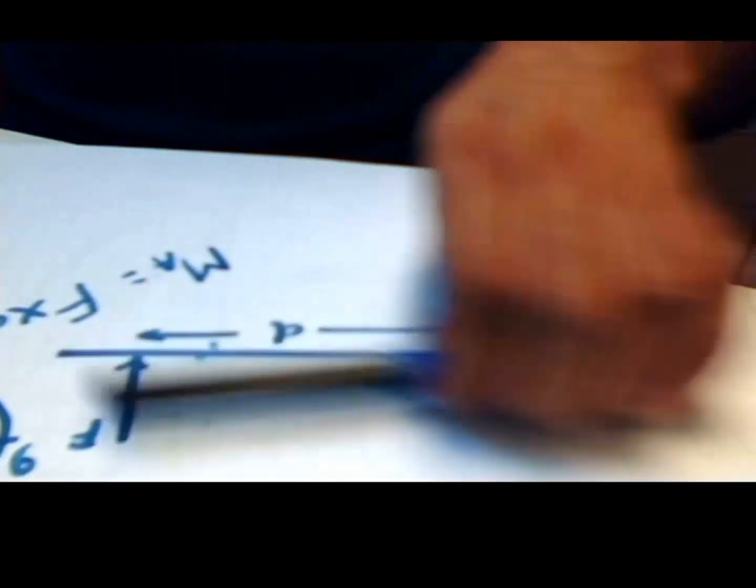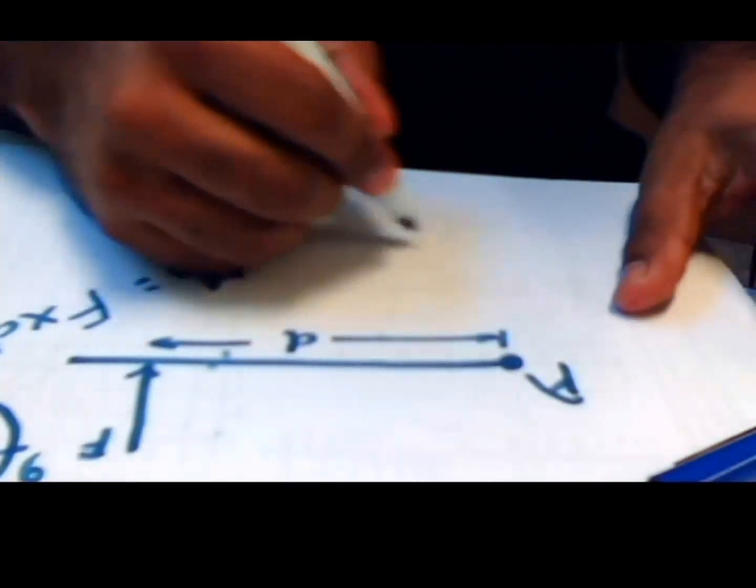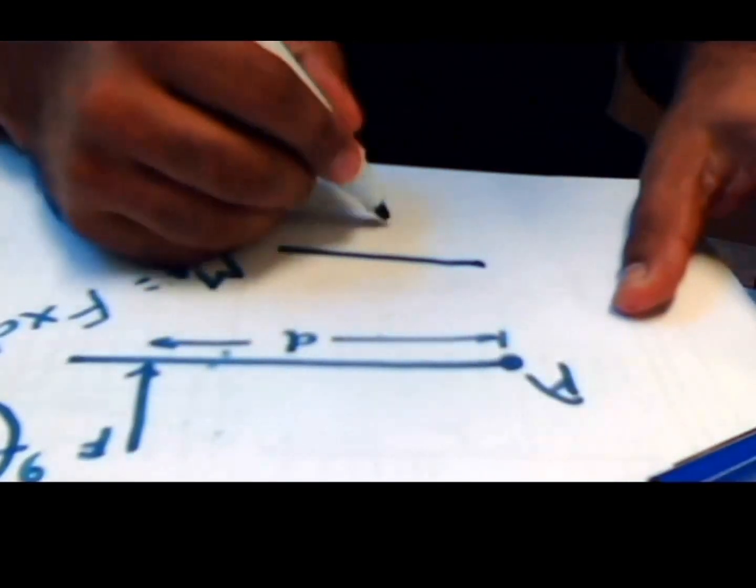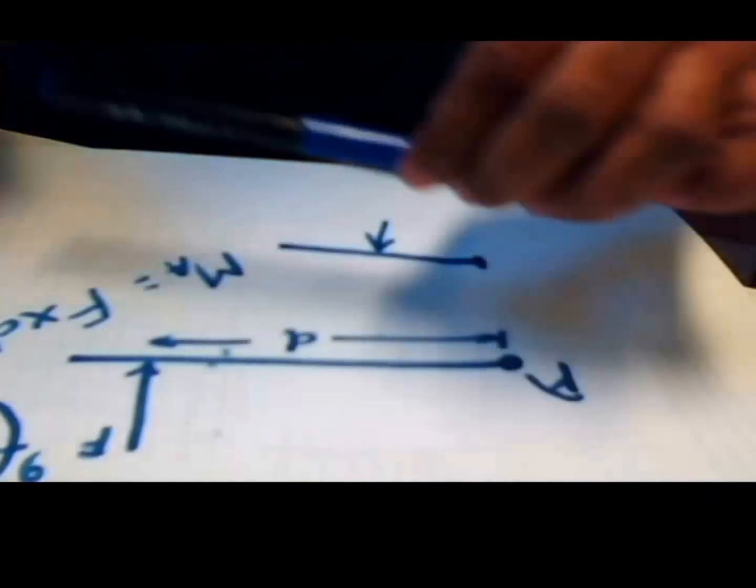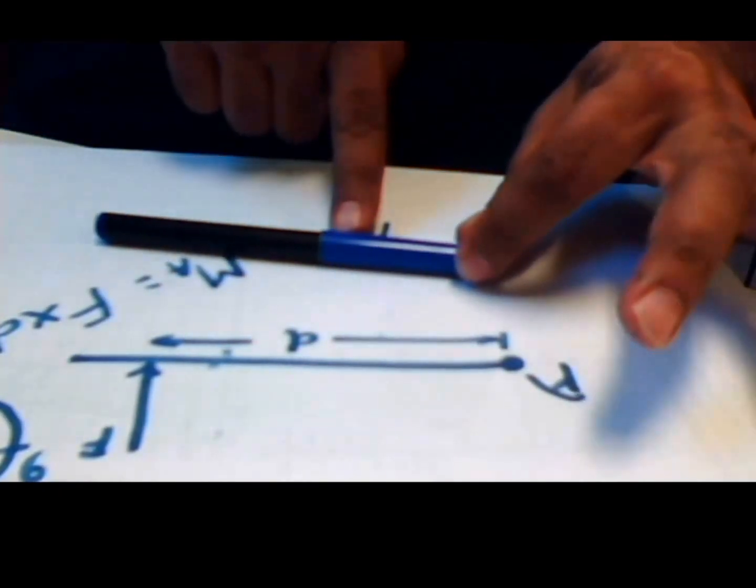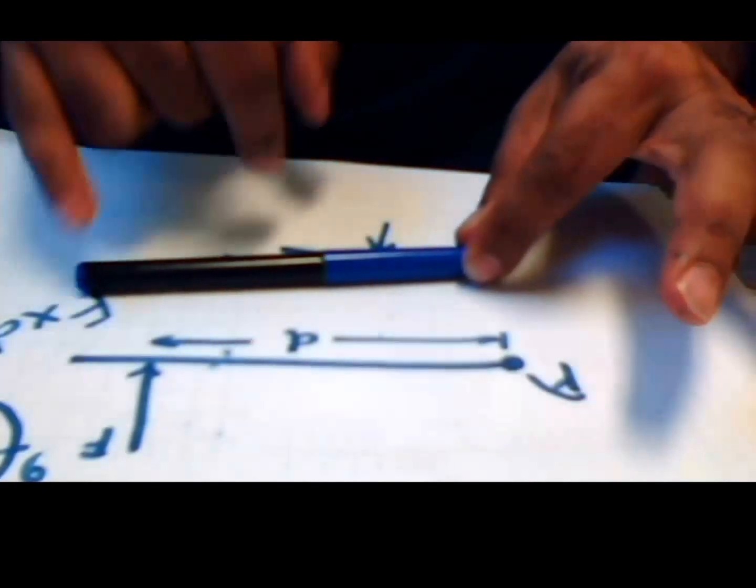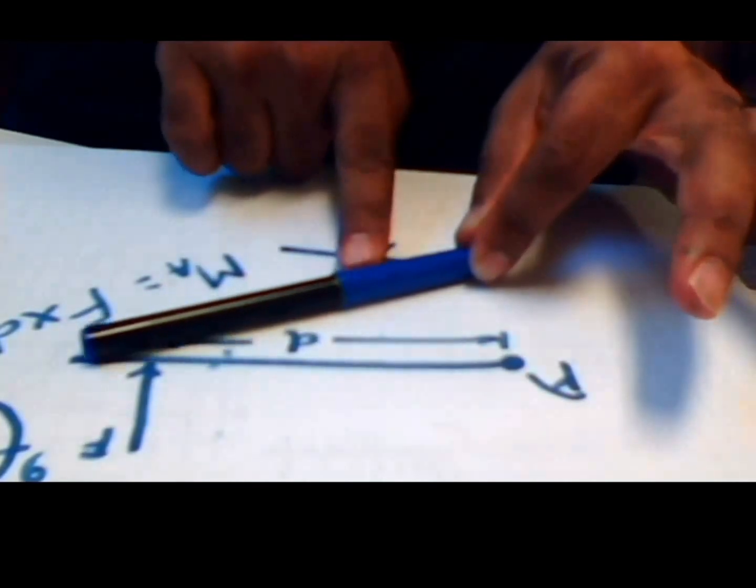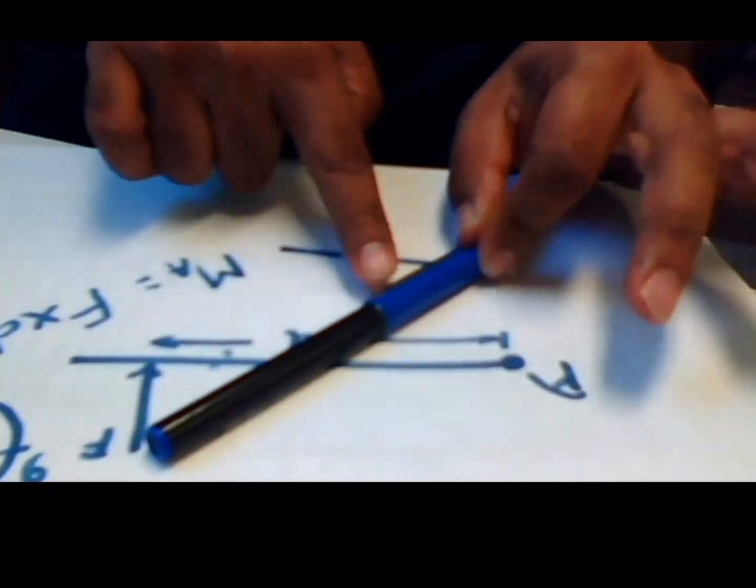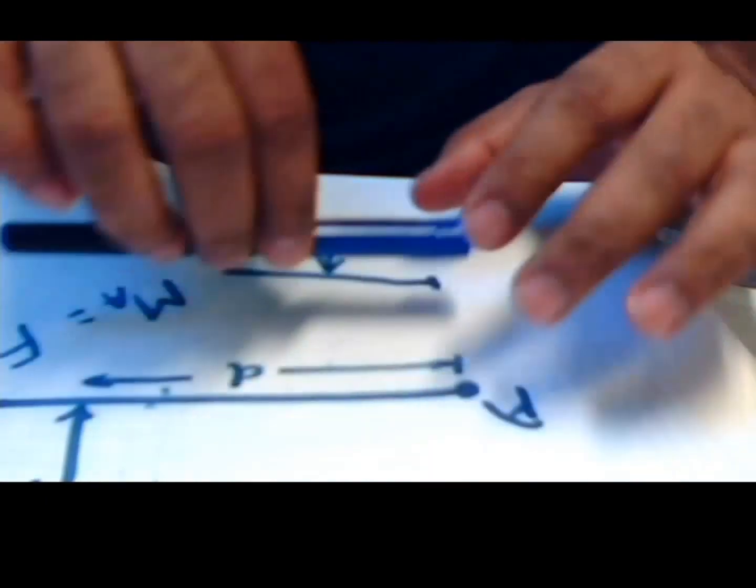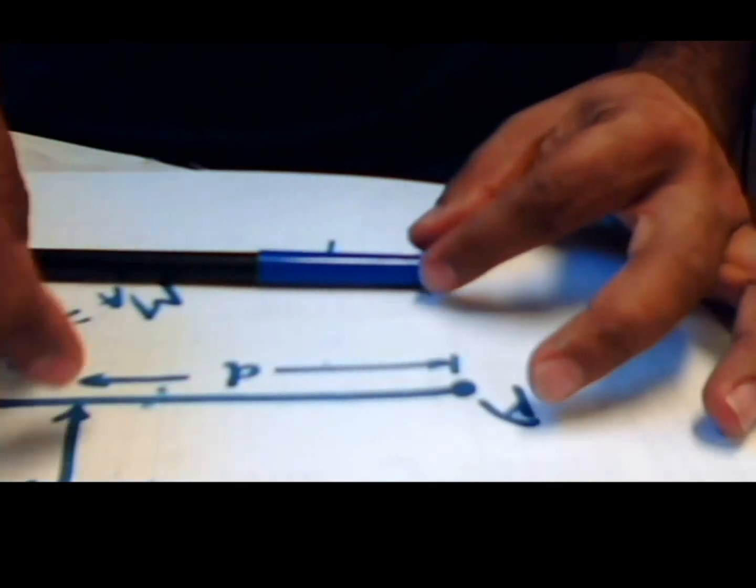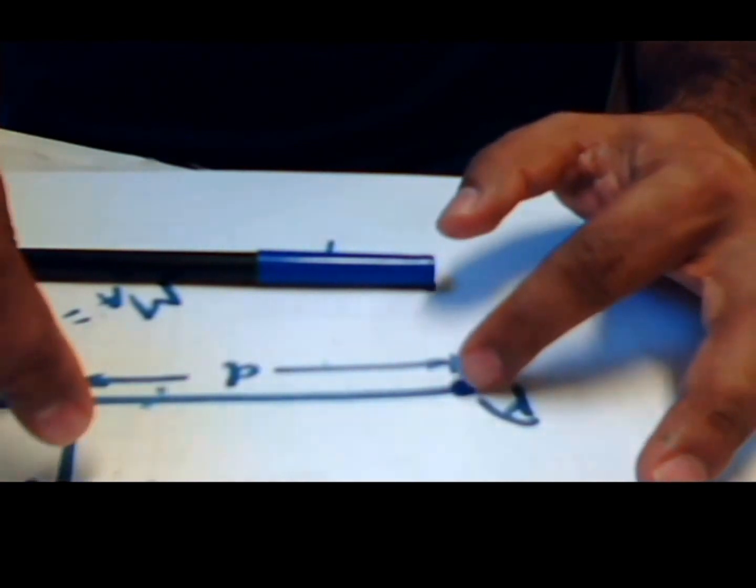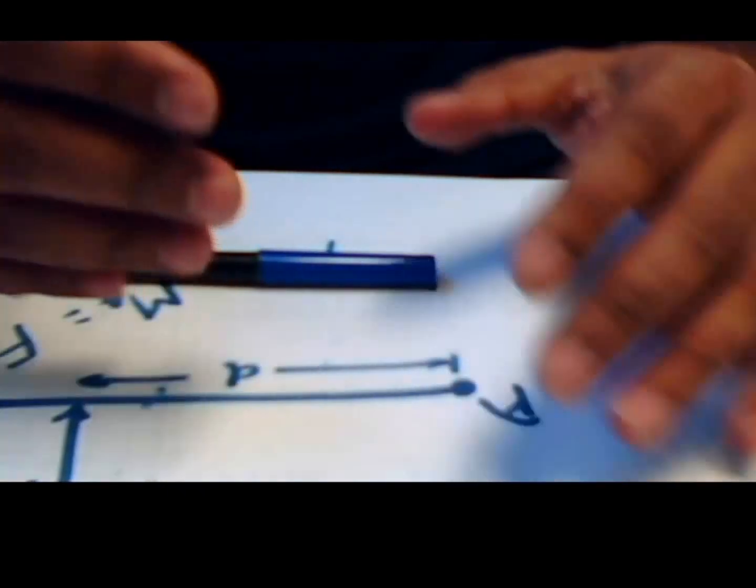If we have another force which is acting upward instead of downward, then what will happen? Put the pen here, apply the force here, and if you see the tip, it is moving anti-clockwise. So that is anti-clockwise.